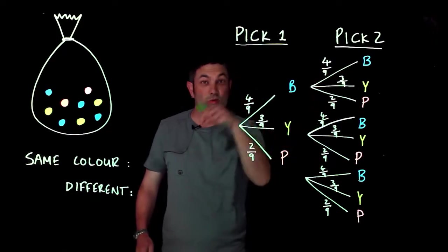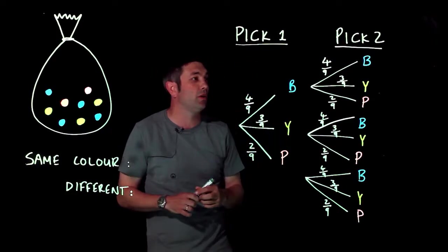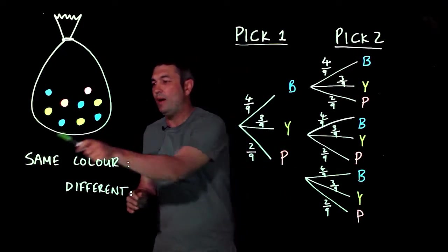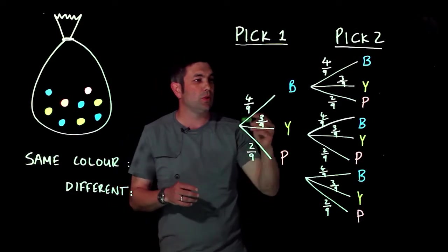Same probabilities because we're replacing the counter. It's very important that we remember we're replacing the counter. Now if I'm trying to find the probability of finding the same color, I actually have a few options.